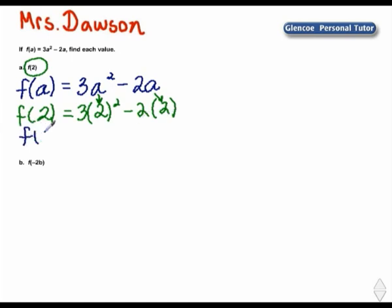Following the correct order of operations, we need to do 2 squared, which is 4, and then subtract the product of 2 times 2, which is also 4.